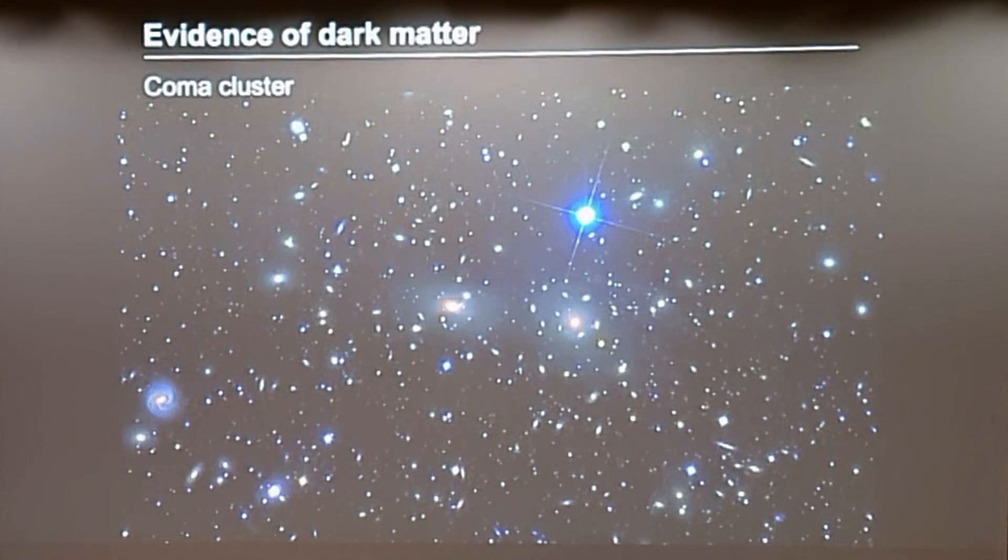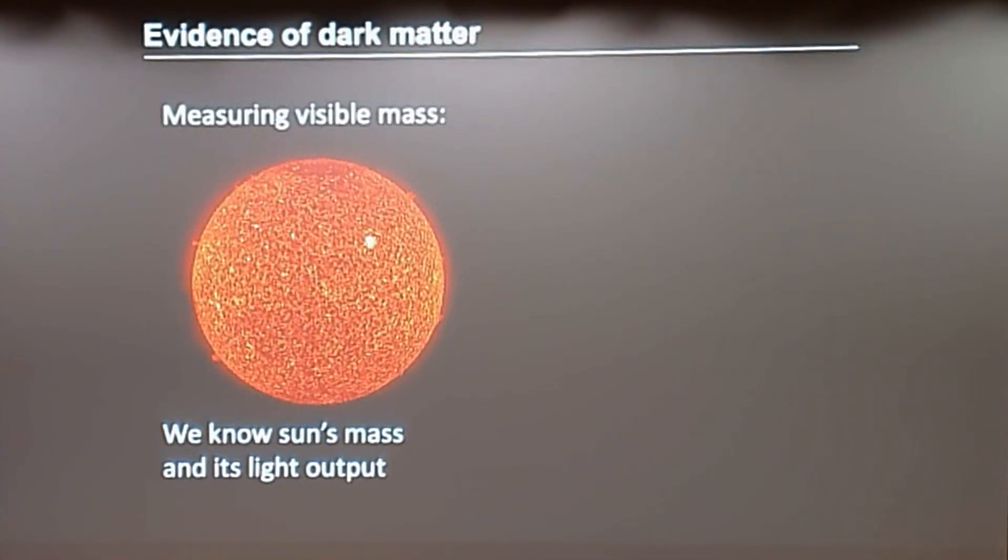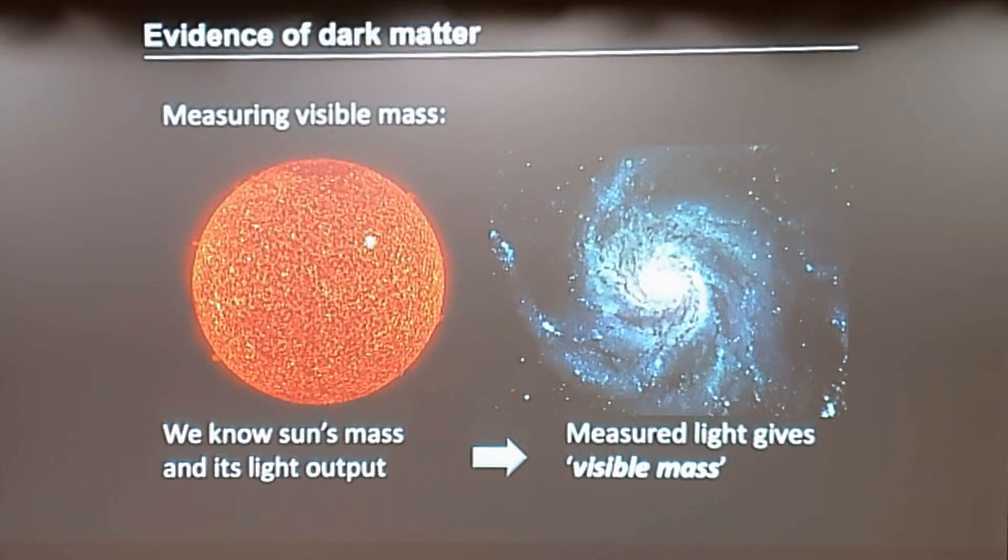The only way that we can explain this is by having to have way more mass than we can see. We can measure something called the dynamical mass - that's how much mass there has to be in the Coma cluster so that it doesn't tear itself apart. We can compare the dynamical mass with the mass that we can see. We know how massive the sun is, we know how much light the sun emits. If we make a simple assumption that a given galaxy that we observe is made of stars just like our sun, then we simply take all of the light from the galaxy, divide it by the light from the sun, and that number is the number of solar masses that the galaxy would have.